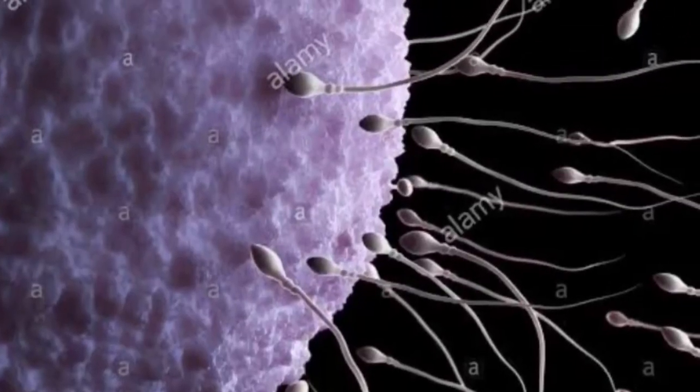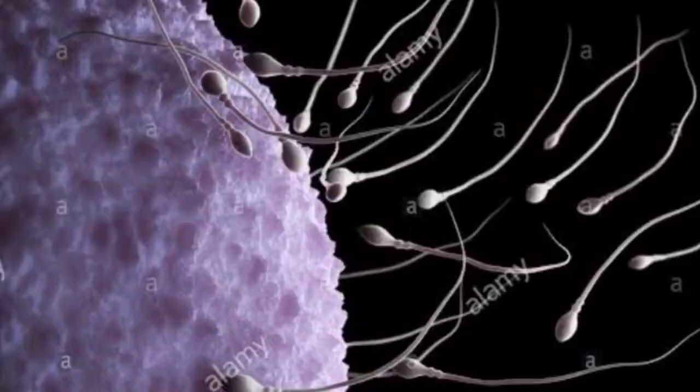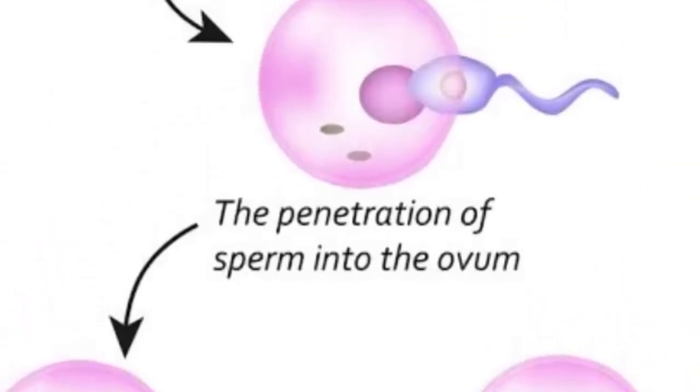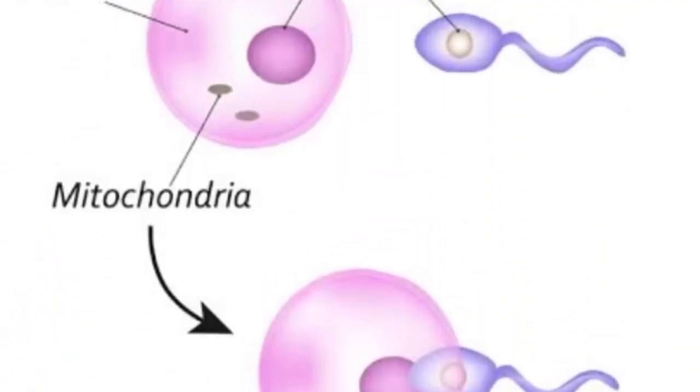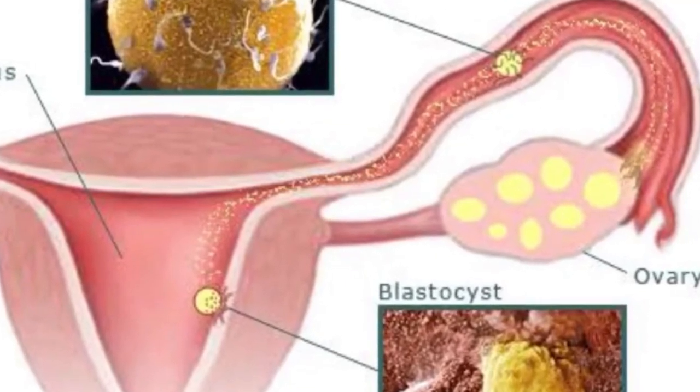So out of a few hundred capacitated sperms which surround the ovum, only one pierces the zona pellucida and enters the ovum. As a result of fertilization, the diploid chromosome number is restored.